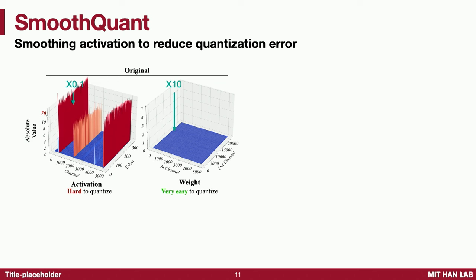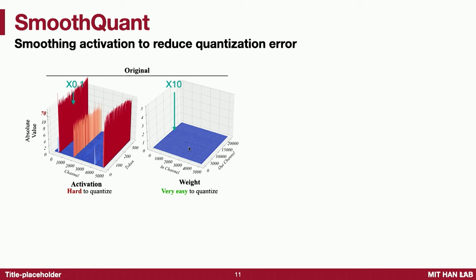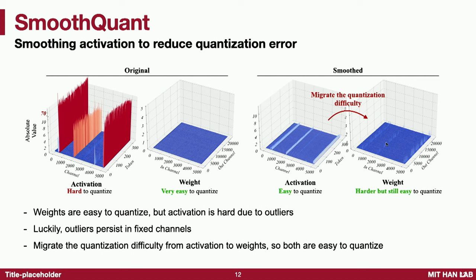We use a very simple heuristic: 0.1 × 10 equals 1 × 1 — matrix multiplication is linear. So 1 × 100 equals 10 × 10. You can smooth those outliers by channel-wise multiplying with a scaling factor. Like here, we multiply the activation by 0.1 and the weight by 10, so the activation becomes much easier to quantize and the weight becomes only slightly harder. This leads to no runtime overhead — everything can be done at compile time in a mathematically equivalent translation, and it requires no fine-tuning, which is very expensive for large language models.